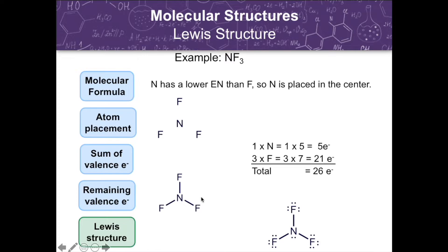We then distribute the remaining electrons in pairs so that each atom ends up with 8 electrons, satisfying the octet rule. First, we place the lone pairs on the surrounding atoms to give each an octet, and if any electrons remain, place them around the central atom. In this example, we give each fluorine atom 3 lone pairs — giving it 2, 4, 6, and then 8 electrons. We have used up 18 electrons for the surrounding fluorine atoms. Subtracting from 20, we still have 2 electrons remaining, which we place on the central nitrogen atom.